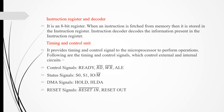The timing and control unit is a very important unit. It provides timing and control signals to the processor to perform operations, controlling both external and internal circuits. The control signals include READY, RD bar, WR bar, and ALE. The status signals are S0, S1, and IO/M bar. There are also HOLD, HLDA, and reset signals: RESET IN bar and RESET OUT.